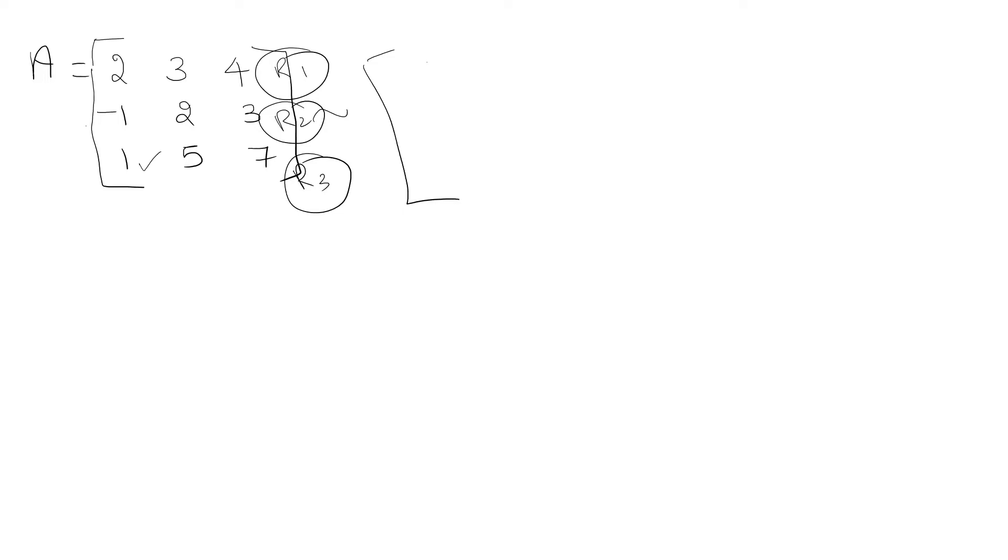The new matrix has first row 1, 5, 7, second row -1, 2, 3, and third row 2, 3, 4. I have interchanged row 1 and row 3. Now the first non-zero element is 1.